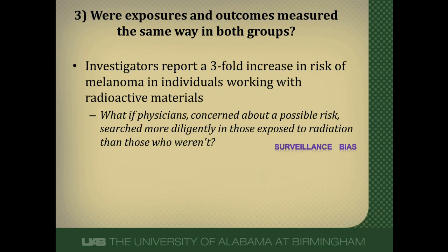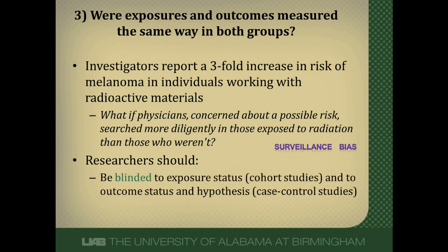This leads to something called surveillance bias. Researchers need to look just as hard in both groups — both exposed and unexposed — and shouldn't do things differently. One way to help is to blind the researchers to exposure status in a cohort study, or to outcome status in a case-control study. We also need standardized methods used the exact same way in both groups, with standardized definitions of what an exposure and an outcome are, applied the same in both groups.